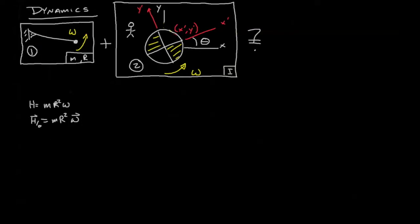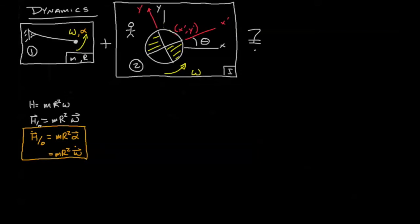In orange: if there's some sort of changing momentum, we'd say that the change in momentum is equal to mass times r squared times alpha, or equivalently m r squared times omega dot. This tells us the change in angular momentum, coming directly from the equation for momentum of a rotating mass.